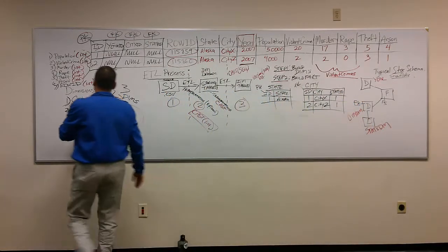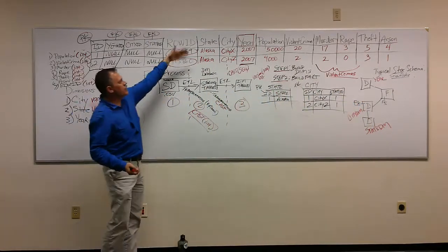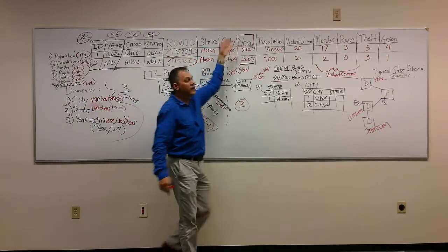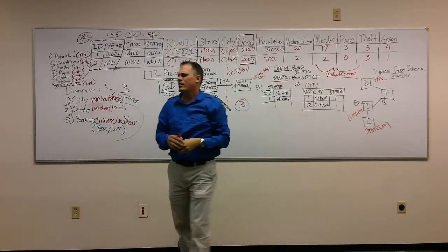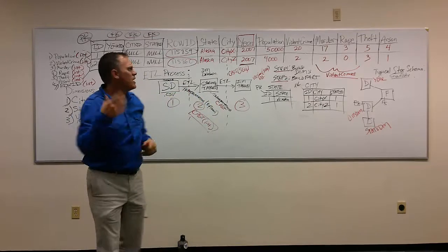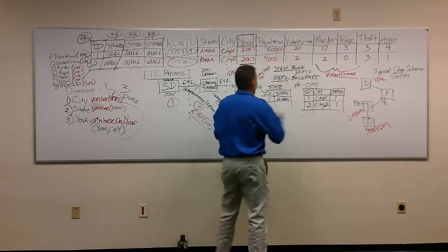Now, the year would be done the same way. To get the year, we would do select distinct on year. And that would give us, I think it's 2006, 7, and 8. So the year would look like this, though.